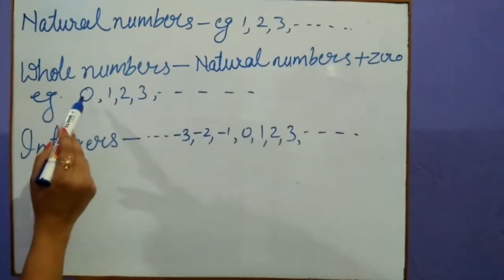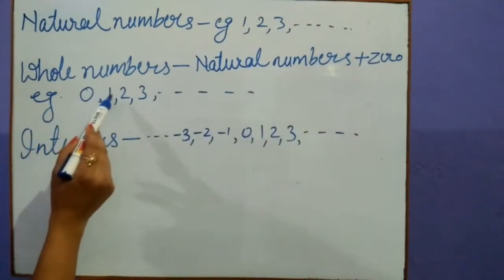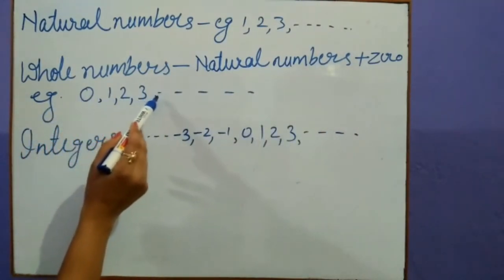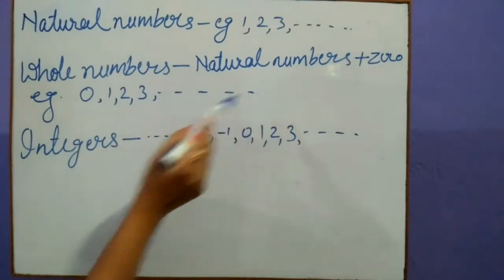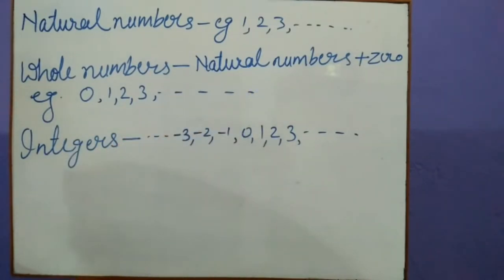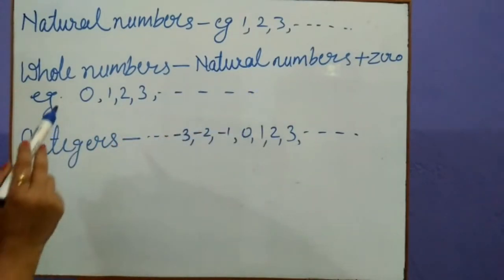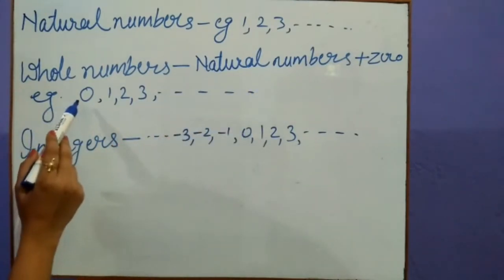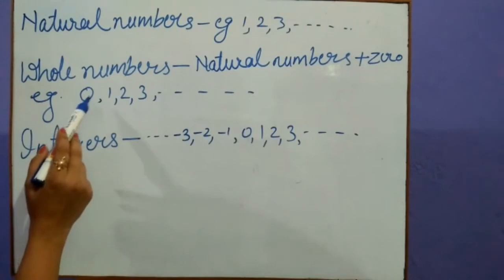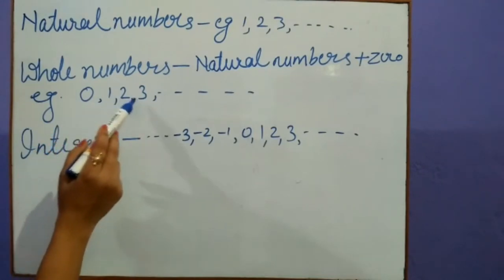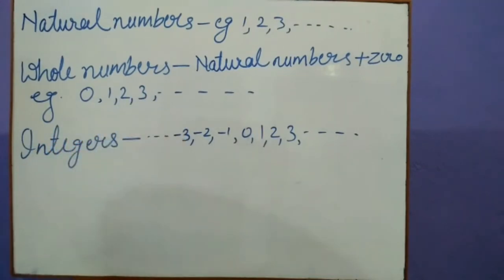For example, 0, 1, 2, 3 and so on. The numbers starting from 0, 1, 2, 3 and so on are whole numbers.